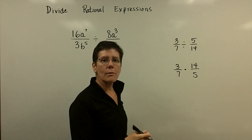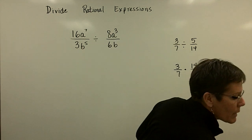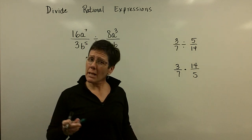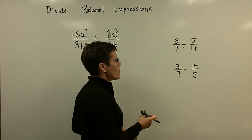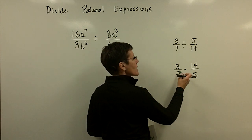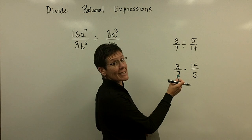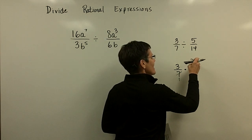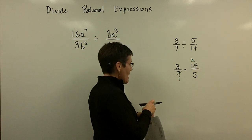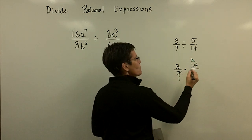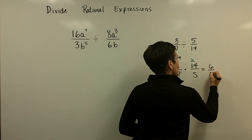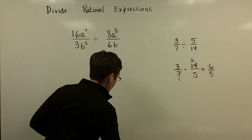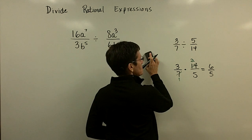We're back to multiplication now, so I'm not going to spend much time on this topic. I just removed the common factors: seven goes in here once and in here twice, and the answer to this problem is six over five. Let's go ahead and do one with variables.